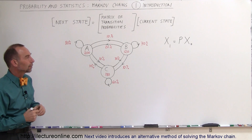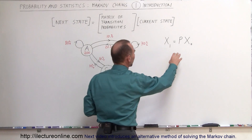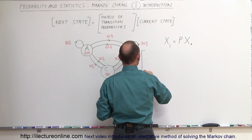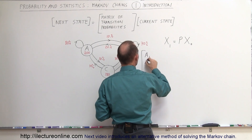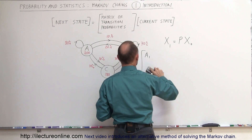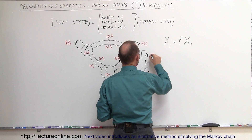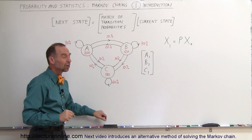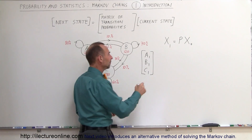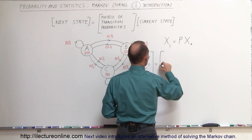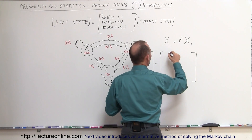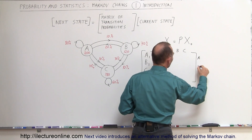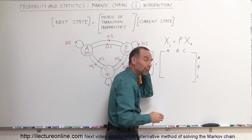Let's do one step right here. We have the current state matrix and we'll produce the predictive state matrix — let's call it A1, B1, and C1. That will be the next state matrix representing the number of people going to A, B, and C in the following week — could be the following month or day, it doesn't really matter. The probability matrix will have A, B, and C on both the horizontal and vertical axis.